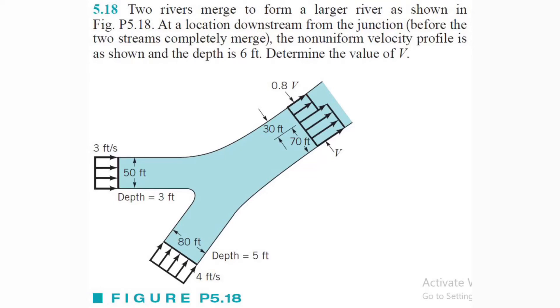Alright, so what's going on? We got problem 5.18. This one says two rivers merge to form a large river, as shown at a location downstream from the junction before the two streams completely merge. The non-uniform velocity profile is right there as shown, 0.8V and then V, and the depth is 6 feet. So we need to determine the value of V. Let's go ahead and get started.